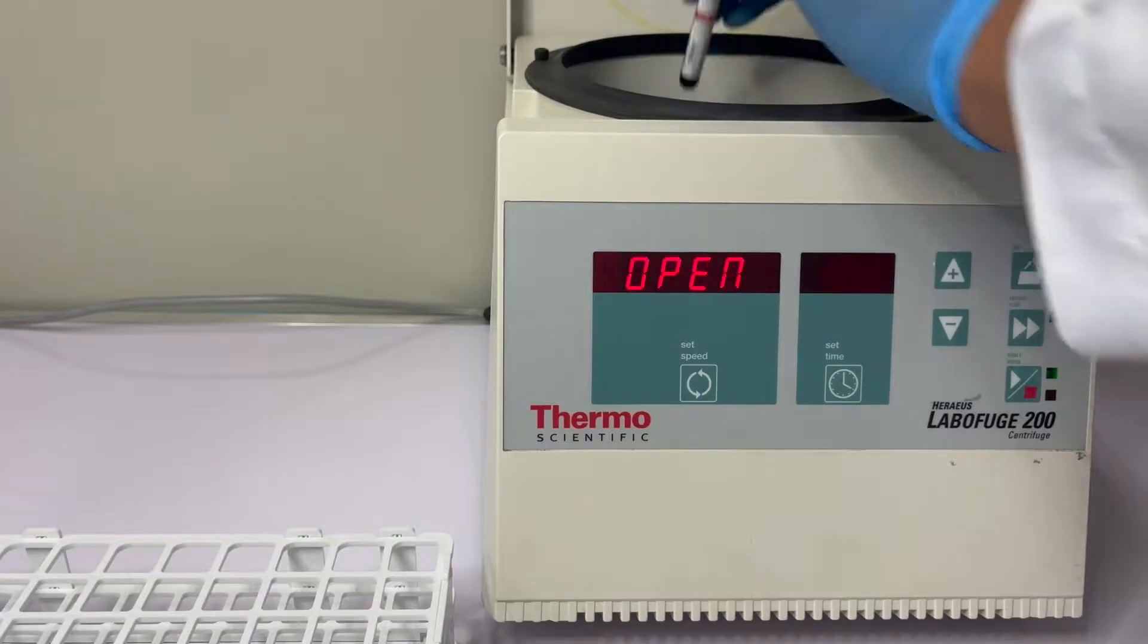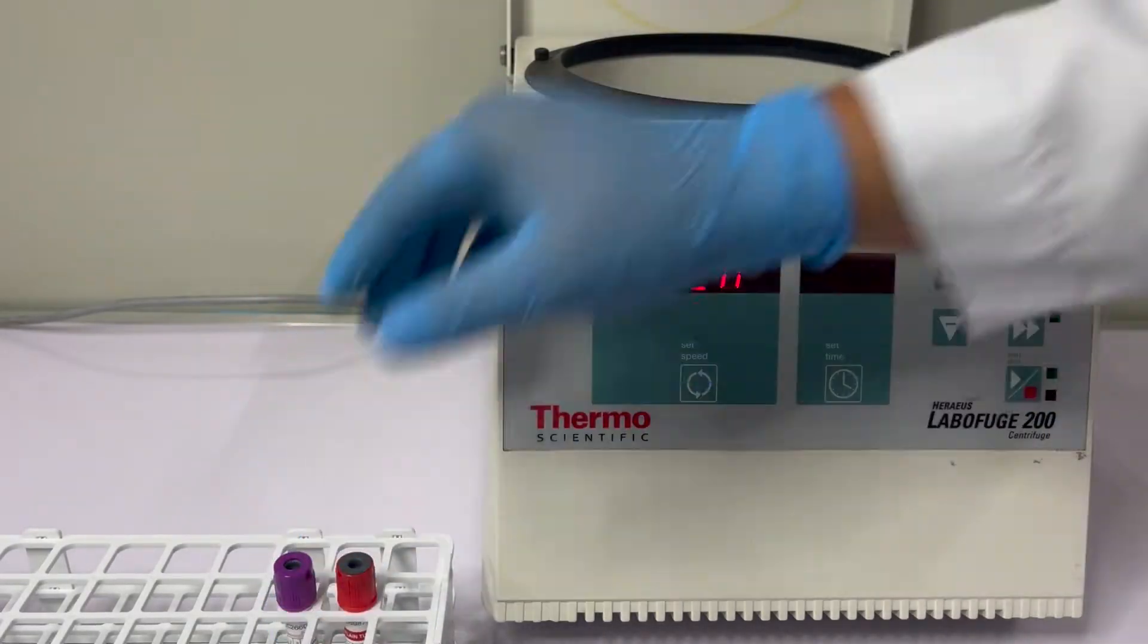After centrifugation, gently take out the tubes making sure not to disturb the settled cell components.